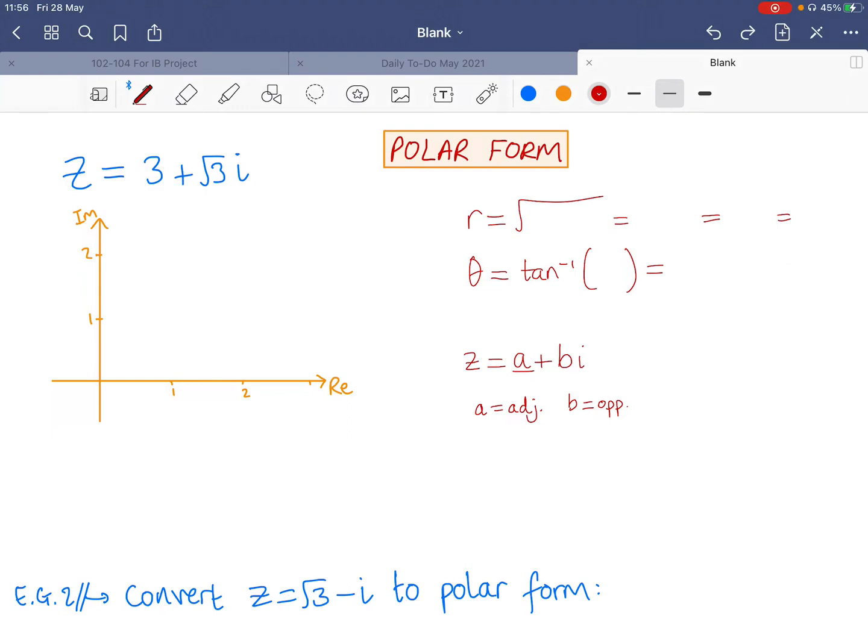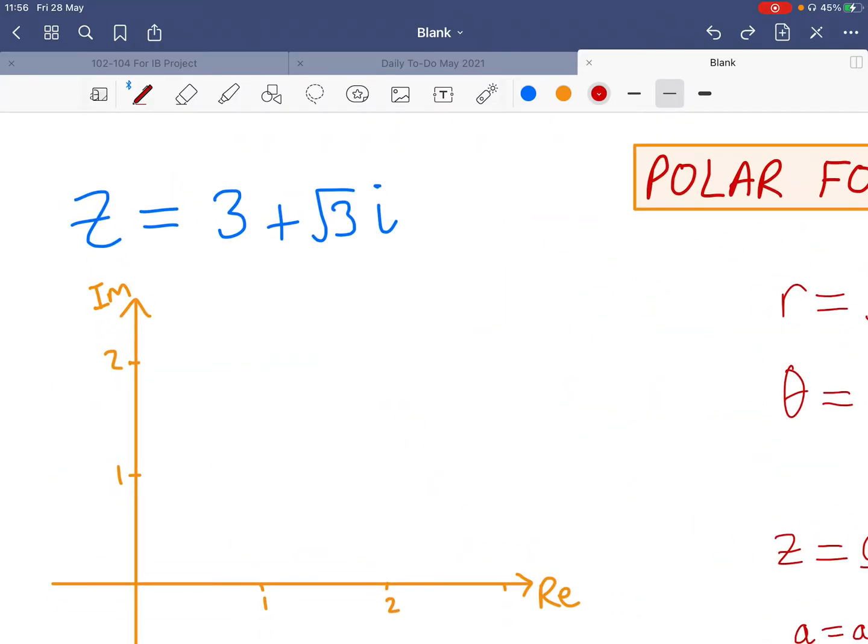Okay, so now we come to our next form, our next way of writing complex numbers. You should have seen this style here, where we use the rectangular or Cartesian form of a complex number, simply in the form a plus bi, or x plus yi in some cases.